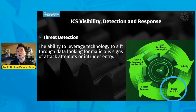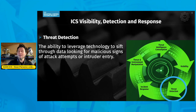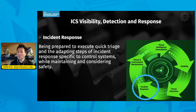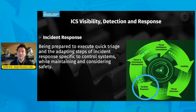When we have threat intelligence married up with visibility as well as threat detection and we're looking in the environment for threats, we could find threats — which means in industrial control system incident response, we must be ready, fully prepared to deploy things like quick triage of an incident, understanding what the threats are in the environment, and being prepared to do incident response adapted specifically for the industrial control system space. All of this can occur while we're fighting through an actual attack, still maintaining the safety and reliability of a control environment.